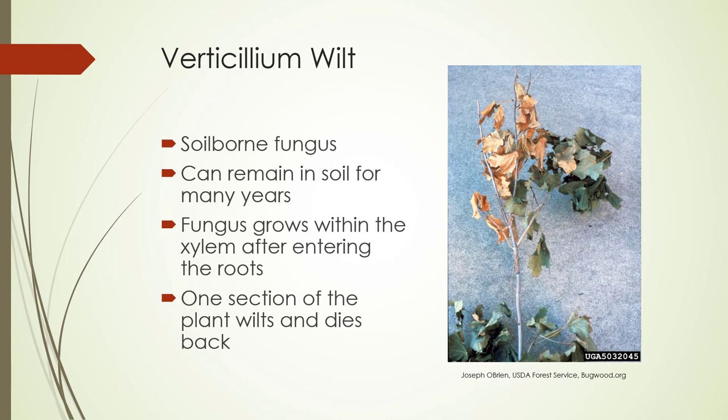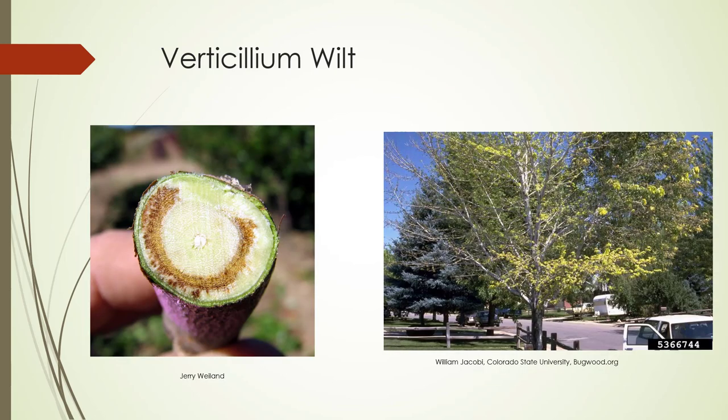Verticillium wilt is a soil-borne fungus. It can remain in the soil for many years, and wet soils just keep it thriving. It grows within the xylem after it enters the roots, and you'll see one section of the plant will wilt and die back. If you do a cross section, you'll see the fungus has gotten into the main stem of the plant, preventing water from moving to the top of the tree.